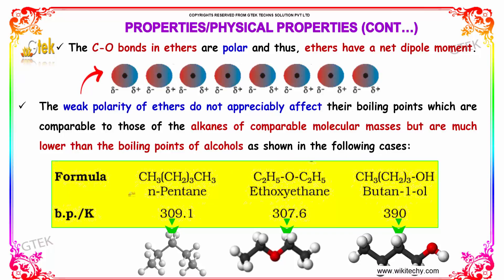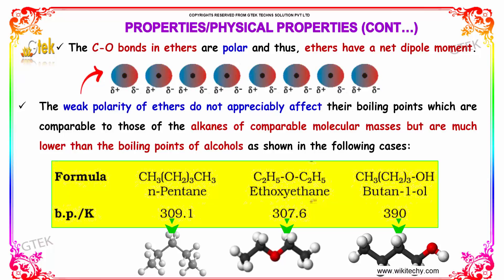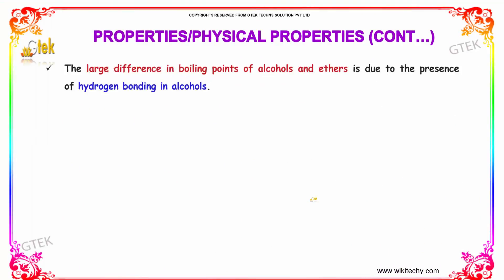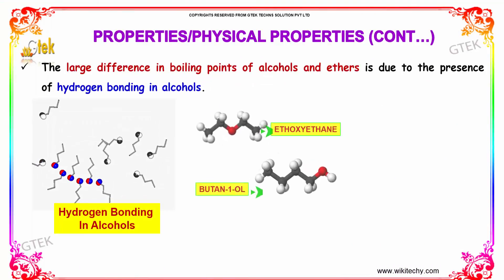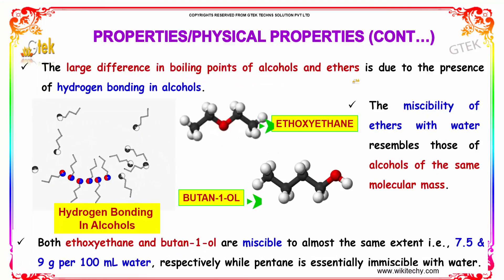For comparable molecular formulas: n-pentane has a boiling point of 309.1 K, ethoxyethane has a boiling point of 307.6 K, whereas butan-1-ol has a boiling point of 390 K. The large difference in boiling points between alcohols and ethers is due to the presence of hydrogen bonding in alcohols.